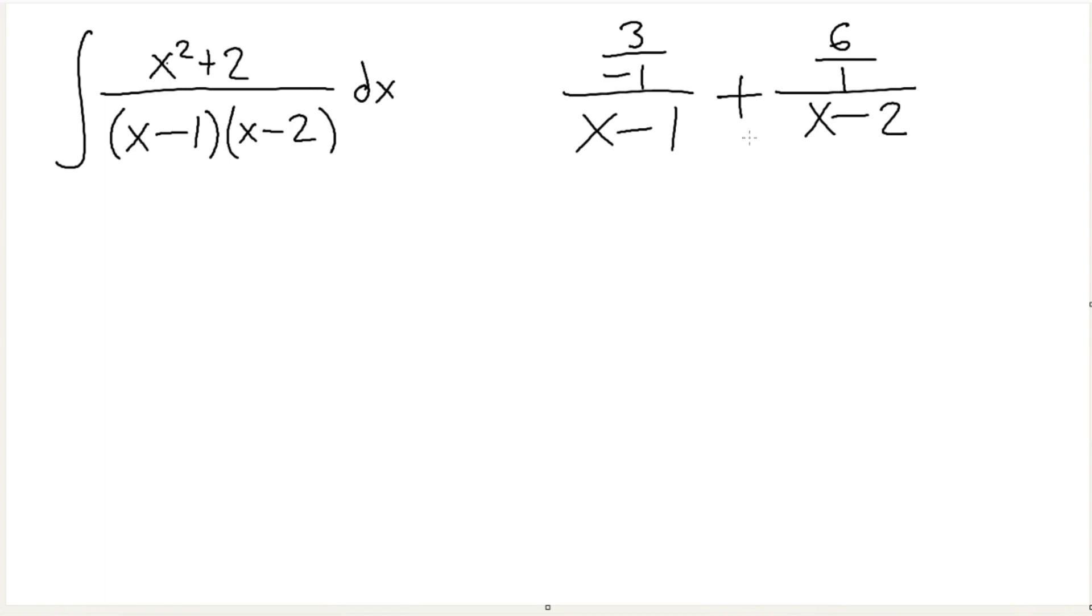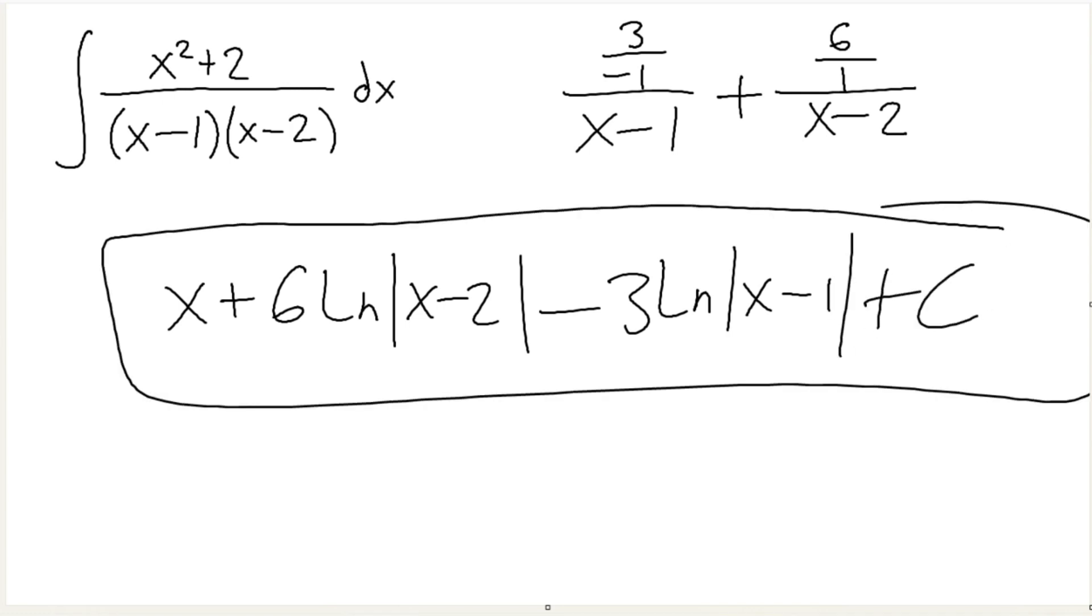So now our answer is, well, this is x square polynomial on top, x square polynomial on the bottom. They're the same degree, we have to add an x. We have to add an x. x and then plus 6ln of x minus 2, minus 3ln x minus 1. That is our answer. Do not forget about this x.